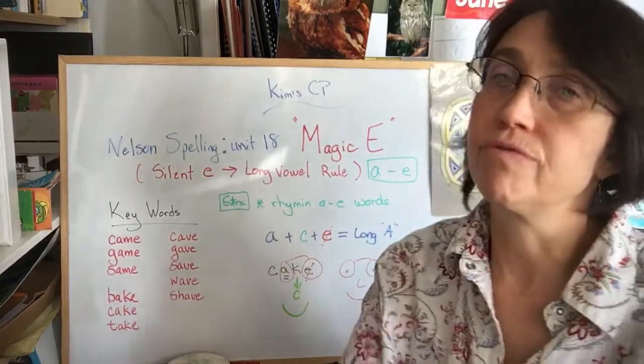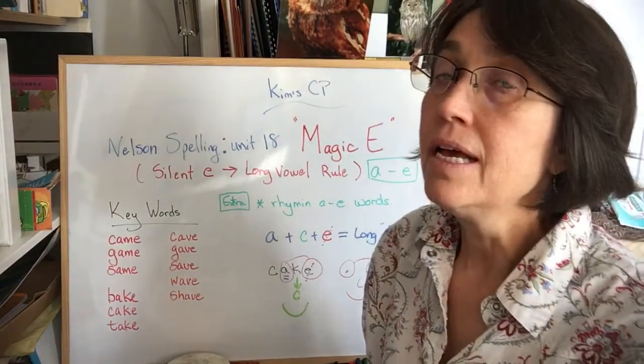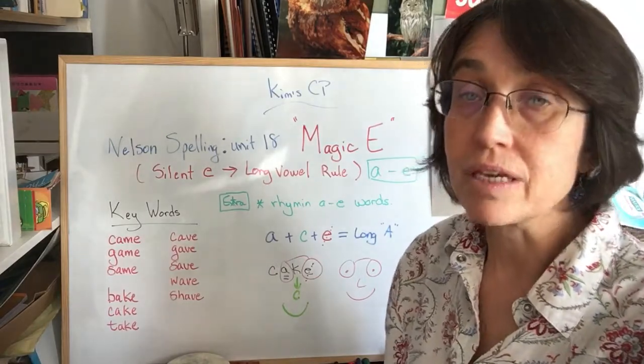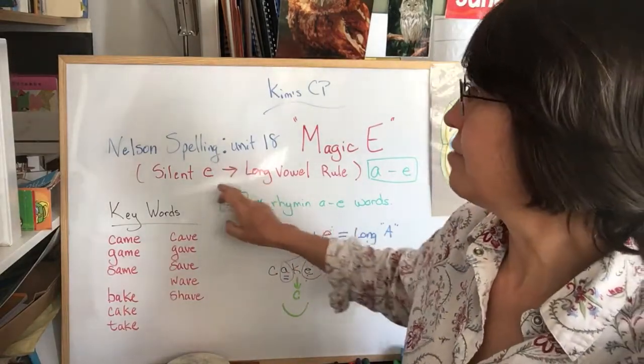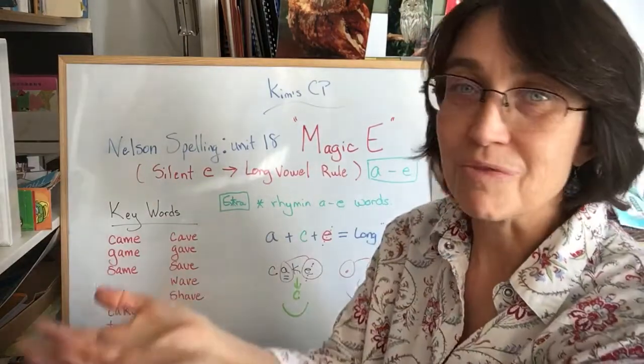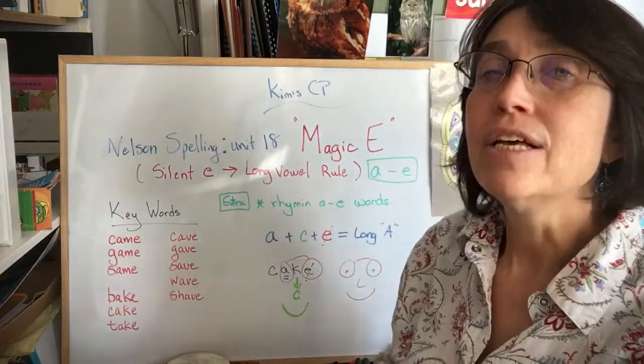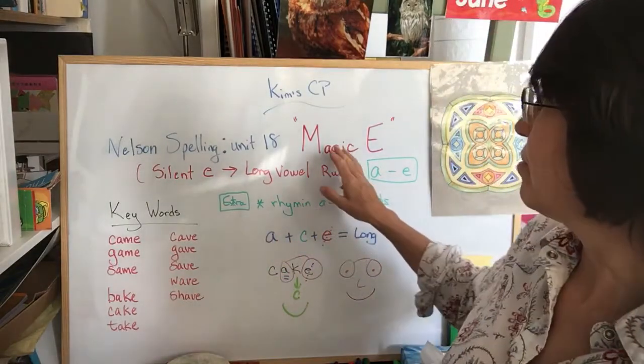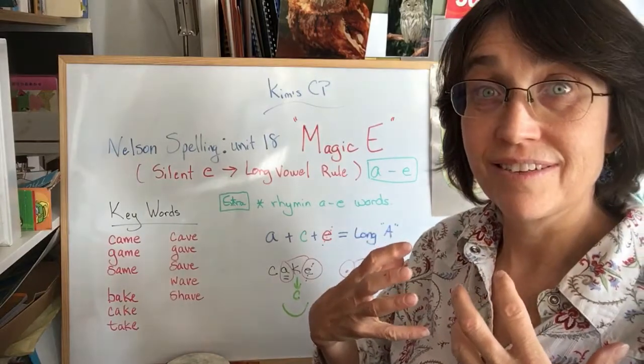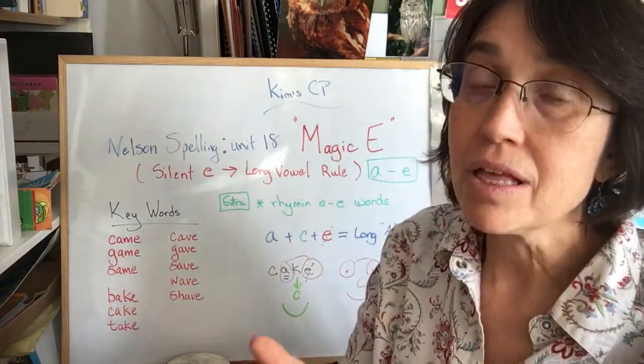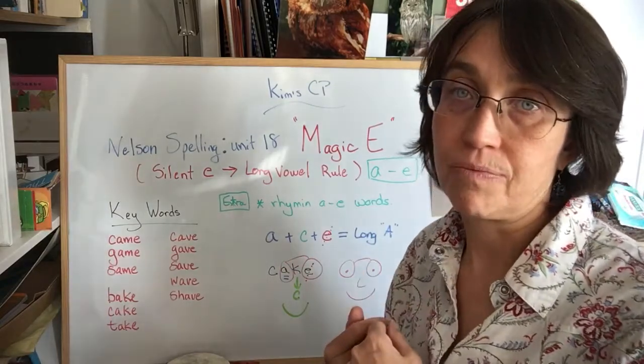This rule is very important to master. The Magic E is sometimes called the Silent E and what it does is it gives its energy or love or help, whatever way you want to understand it, to the first vowel. And that first vowel takes strength and she says her name, not her short sound.